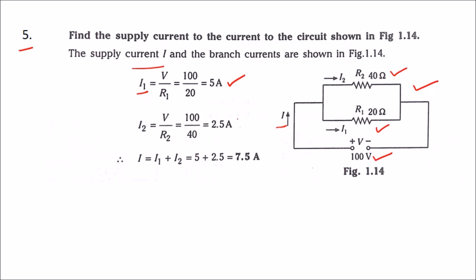The supply current is the summation of I1 and I2, that is 5 plus 2.5, which equals 7.5 amps.